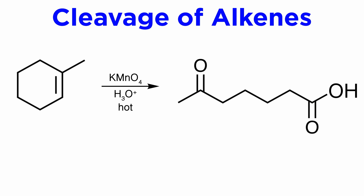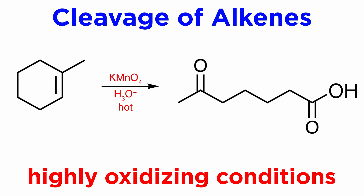Let's check out one more method of cleaving alkenes. Potassium permanganate in neutral or acidic solution and in hot conditions will also cleave carbon-carbon double bonds to give carbonyl-containing products, and because it is such a good oxidizing agent, where we would expect an aldehyde in the context of ozonolysis, we will get either a carboxylic acid or carbon dioxide, depending on how many hydrogens are on that particular carbon.